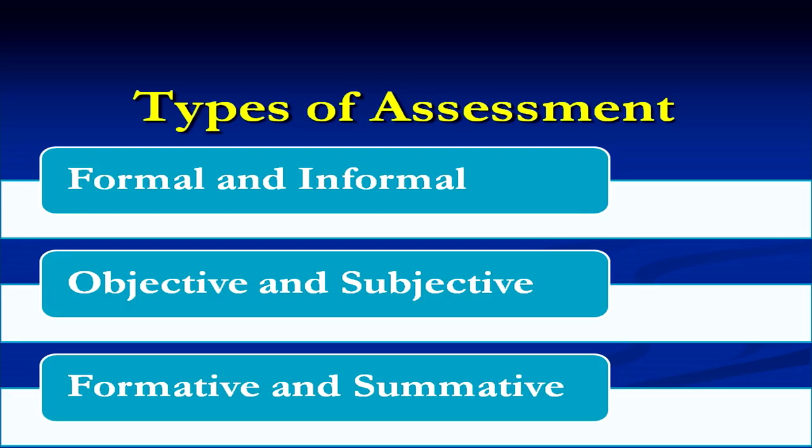Assessment can be classified into different types depending on its nature. One type is formal assessment, which is used to grade the student as pass or fail and to certify and promote them to the next class — that is a formal mechanism of assessment. Informal assessment is carried out by the teacher in the classroom to improve learning among students, to remove their learning difficulties and to enhance learning — that is a sort of informal assessment for the student.